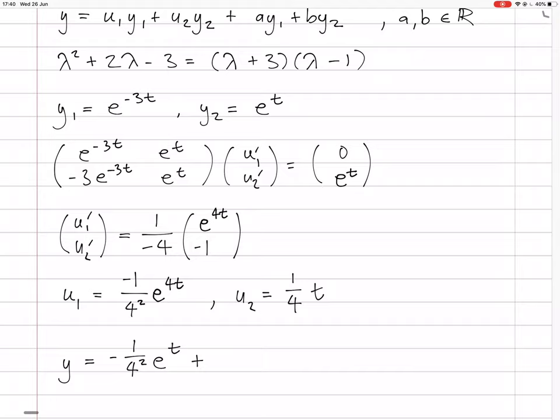Plus u2 y2 is a quarter t times e^t. And then we have these homogeneous terms. We have a e^(-3t) + b e^t.